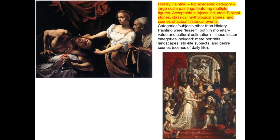History painting has a very strict set of rules — it is usually quite large, usually multiple figures, and tells a story. Acceptable subjects fall into three big groups: actual historical events, biblical narratives, or mythological categories. Lesser categories included portraits, landscapes, still life, and genre scenes. History painting was seen as the be-all end-all — what you aspired to make as a professional painter.